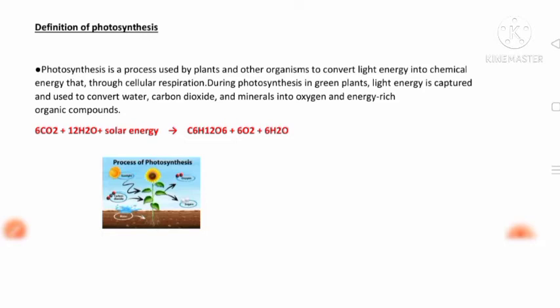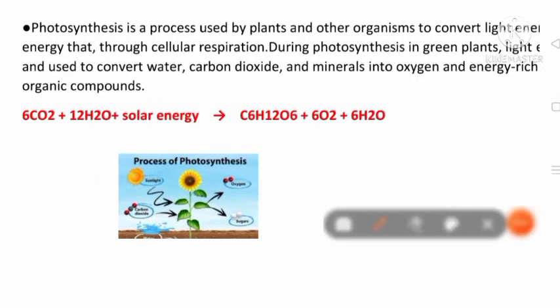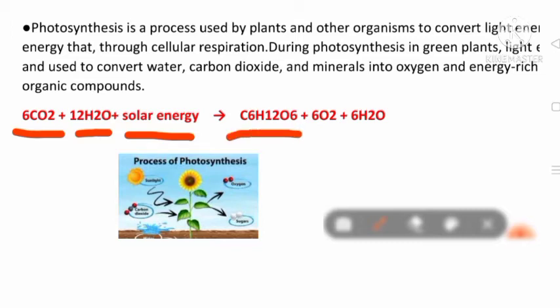This is the very simple concept and definition of photosynthesis. Next, the reaction of photosynthesis. In this reaction, six molecules of carbon dioxide, 12 molecules of water, and solar energy from sunlight are utilized by the green plant. The products are glucose (C6H12O6), and six molecules of oxygen are also liberated in this process, along with six molecules of water formed.